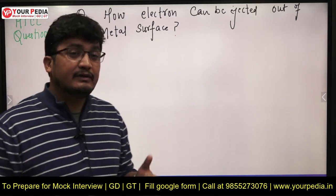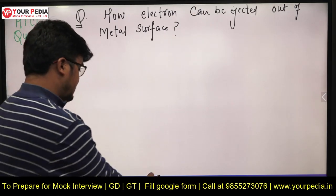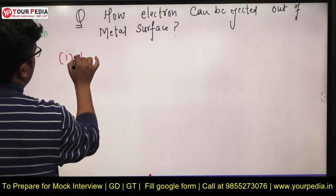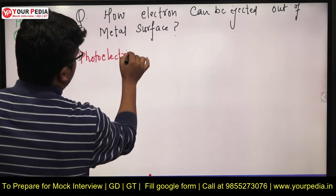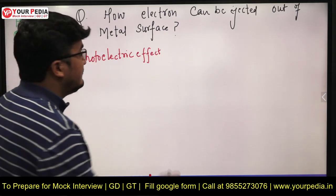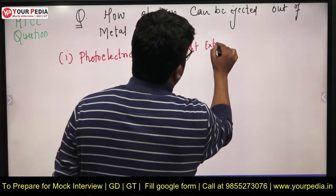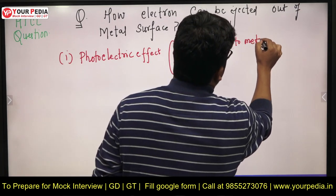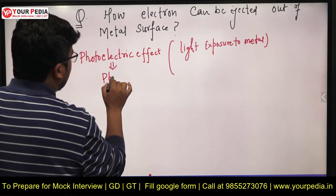They asked him: suppose you are provided with a metal, tell us how you can eject electrons out of the metal surface. So there are so many ways. The very first common thing which comes to our mind is the photoelectric effect — that is, light exposure to metal. This is also called photoelectric emission or photoemission.